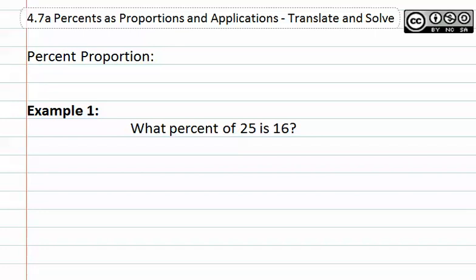Percent proportions can be translated as long as you remember a little formula. This formula is simply written as is over of, otherwise known as part over whole, equals your percent over 100.